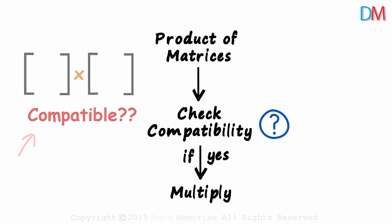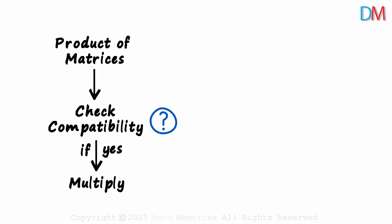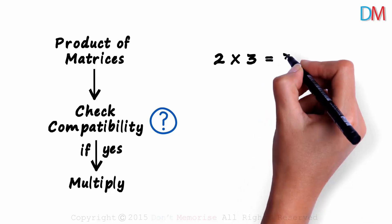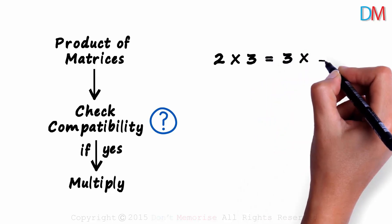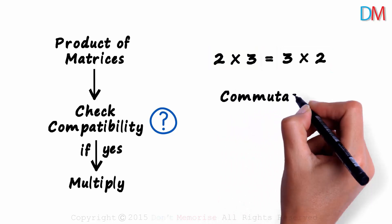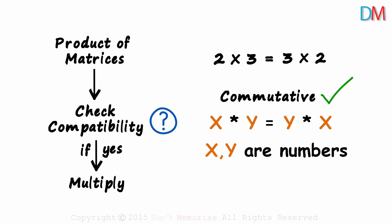But before that, let me ask you an easy question. Let's say we multiply two numbers, 2 and 3. We know that this also equals 3 times 2. 2 times 3 is equal to 3 times 2. This is the commutative property of multiplication. X multiplied by Y will always be equal to Y multiplied by X, if X and Y are numbers.